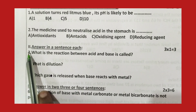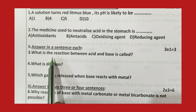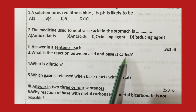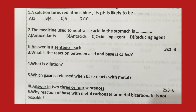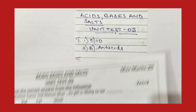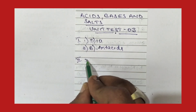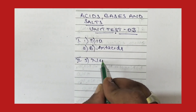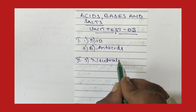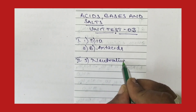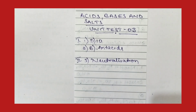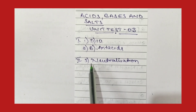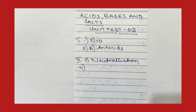The third question: what is the reaction between acid and base called? The reaction between acid and base is called neutralization. Neutralization is a reaction between acid and base to form salt and water. So the reaction between acid and base is called a neutralization reaction.